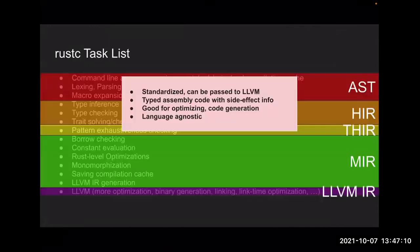Finally there's LLVM IR, generated after monomorphization and Rust-level optimizations. LLVM takes that and does its magic to output a binary.